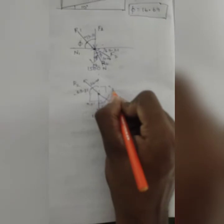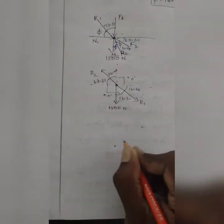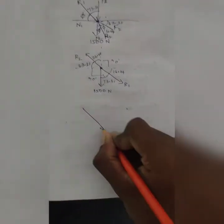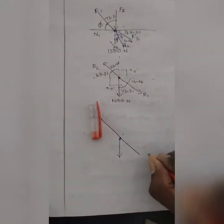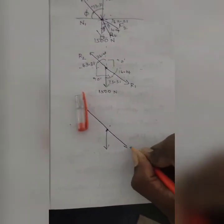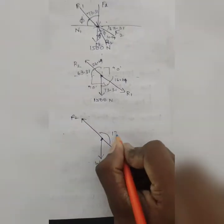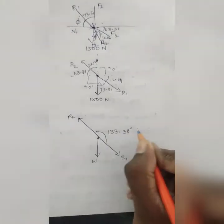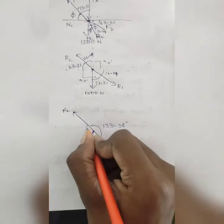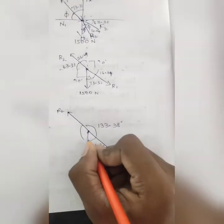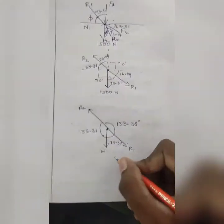This angle is 63.31, this angle is 26.64. Next angle is 73.31, this angle is 16.64, this angle is 90. This angle is 133.38, this angle is 73.31, this angle is 153.31.